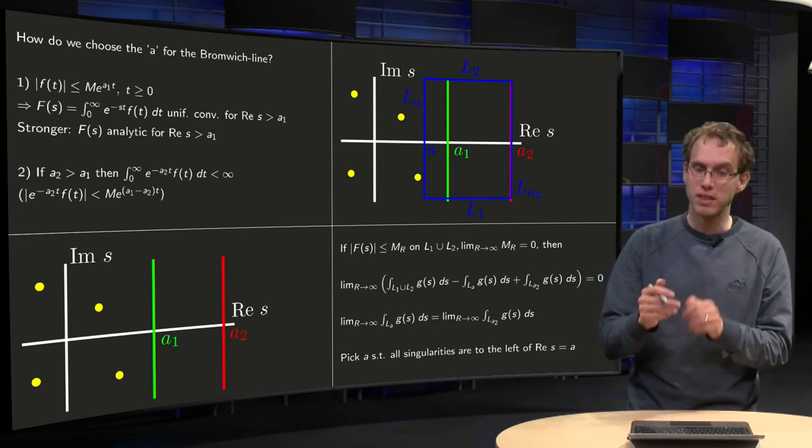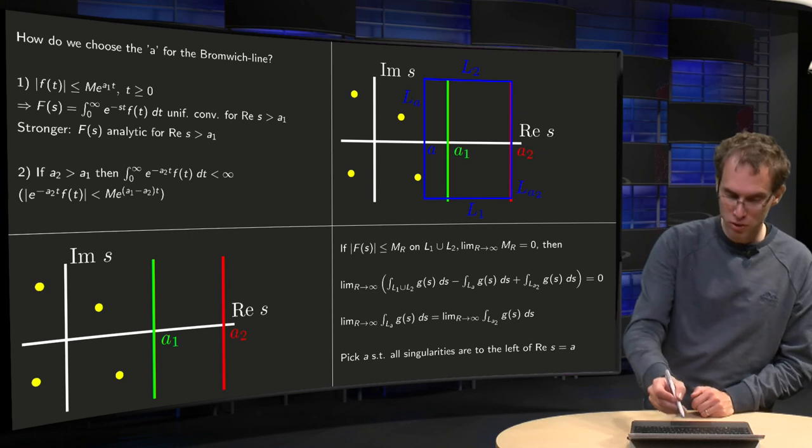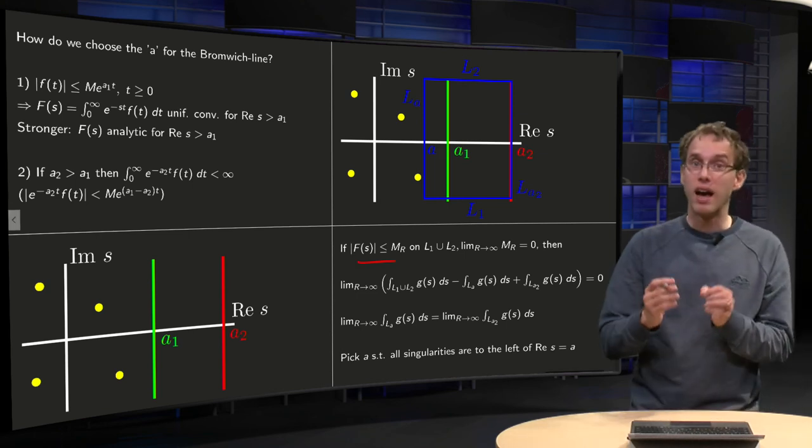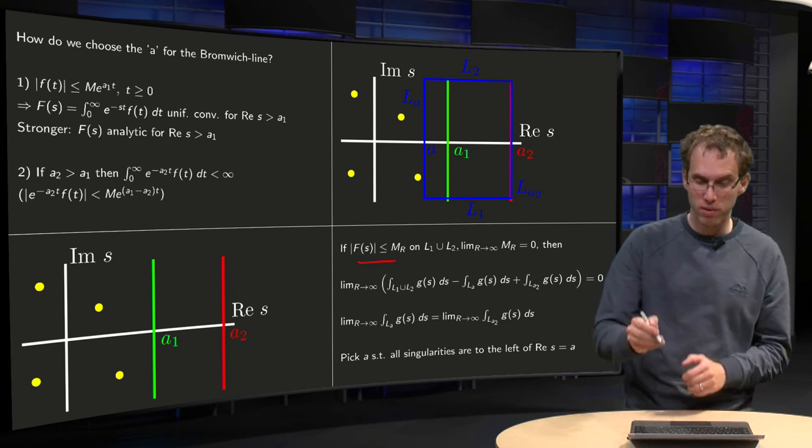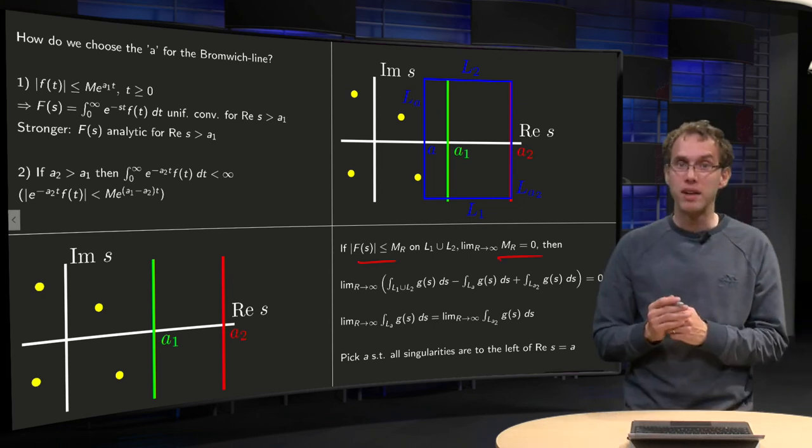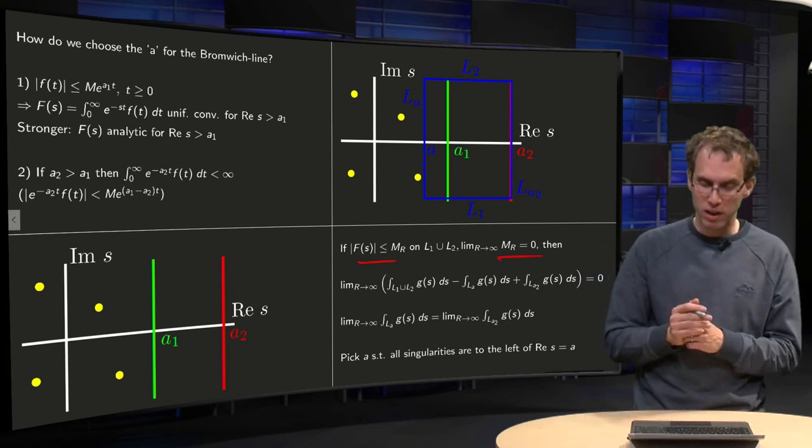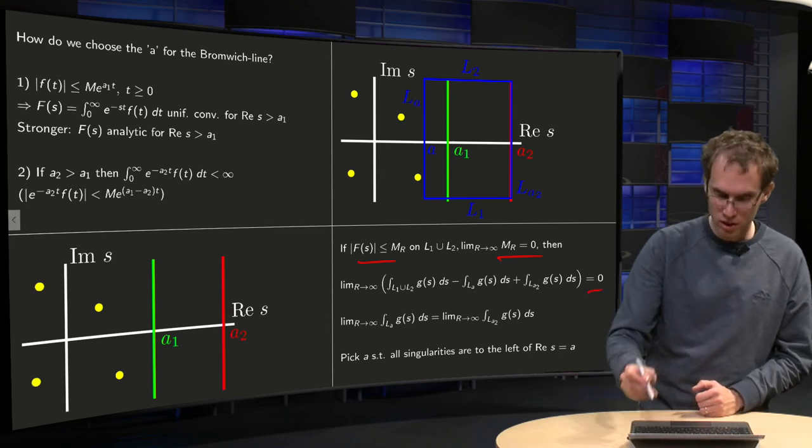Well, when can we get rid of the integrations along l₁ and l₂? If your capital F is bounded by some M_R then going to zero, then we can do this. Total integral is always equal to zero.